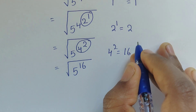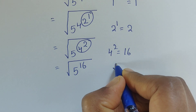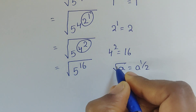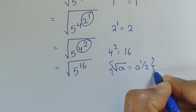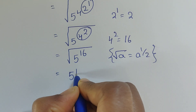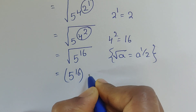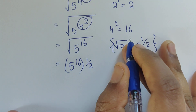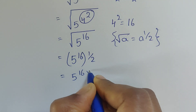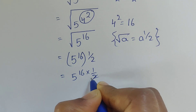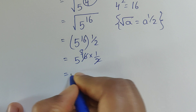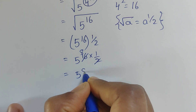Now we apply the formula: square root of a equals a to the power of 1/2. Using this formula, we write 5 to the power of 16, then 5 to the power of 16 times 1/2. Since 2 times 8 equals 16, this simplifies to 5 to the power of 8.